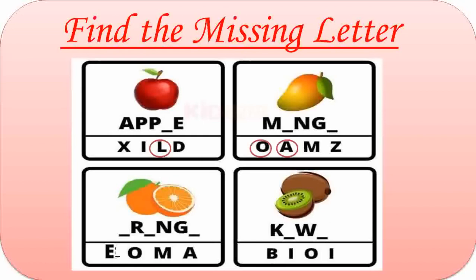Third one is Orange. Here missing letters are O, A, and G. The word becomes O-R-A-N-G-E. Orange. Fourth one is Kiwi. Missing letters are I and I. The word becomes K-I-W-I. Kiwi.